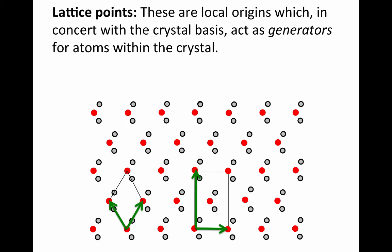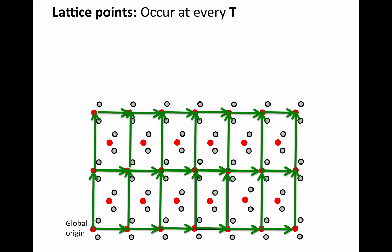So part and parcel with lattice vectors are lattice points. These are local origins that, in concert with this basis that we'll talk about in a second, act as generators for atoms within the crystal. At a minimum, every crystal has lattice points at every combination for the lattice vectors. We'll see in a second there may be additional lattice points as well.